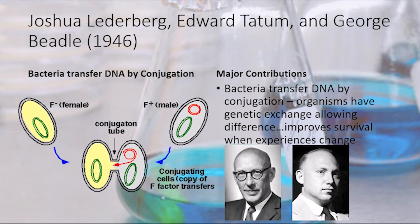Next we're going to talk about Joshua Lederberg, Edward Tatum, and George Beadle. Joshua Lederberg was an American molecular biologist known for his work in microbial genetics, artificial intelligence, and the United States Space Program. He was 33 years old when he won the 1958 Nobel Prize in Physiology or Medicine for discovering that bacteria can mate and exchange genes, also known as bacterial conjugation. He shared this prize with Edward Tatum and George Beadle, who won for their work with genetics.